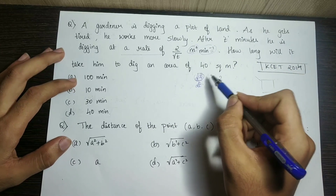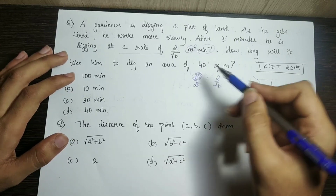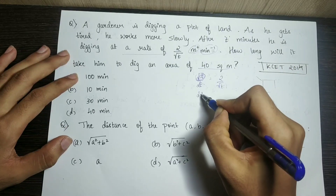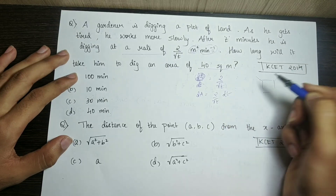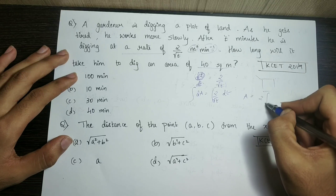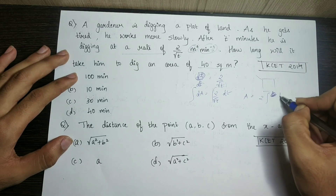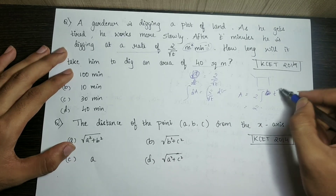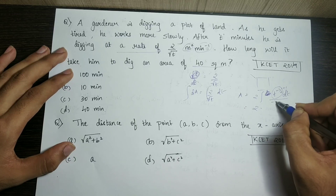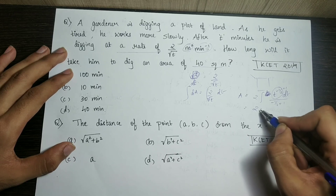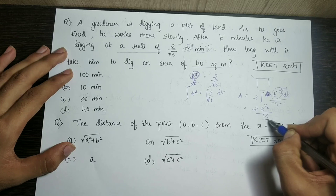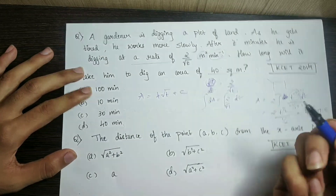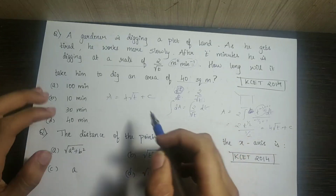We write dA equal to 2 by root t times dt, then integrate both sides. Integrating the right side gives us 4 times the square root of t plus a constant C. So A is equal to 4 root t plus C.